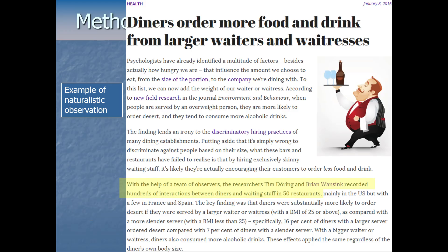Here's a popular press report from a 2016 study that used naturalistic observation. A team of researchers recorded hundreds of interactions between diners and waiting staff at 50 restaurants. They found that people's eating choices seem to be affected by the BMI of their waiter or waitress — basically ordering more dessert and more alcoholic drinks if the server has a higher BMI. You can already think of confounds that may bring these results into question, but cheap and easy studies like these can often provide the groundwork for more controlled experimental studies later.